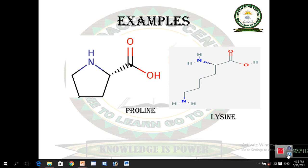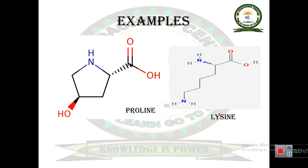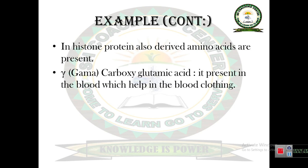When a hydroxyl group is attached with proline, it becomes hydroxyproline — a derivatives amino acid. In the same way, if a hydroxyl group is attached with lysine, that becomes hydroxylysine. Both are derivatives amino acids, and both are present in the collagen protein. A second example is histone protein, which also contains derivatives amino acids.